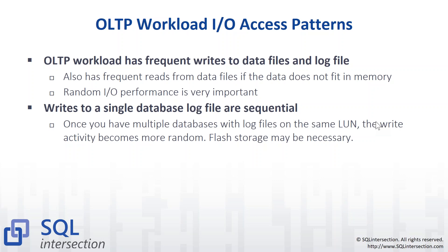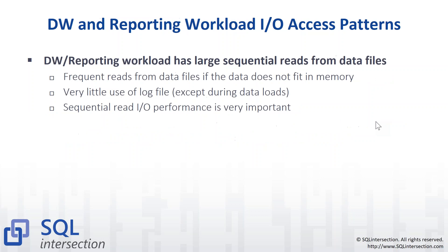For a data warehouse or reporting workload, you're seeing big sequential reads from data files. SQL Server data compression or clustered columnstore indexes can help reduce what you need to read. You're not going to use the log file very much except during data loads, so sequential read I/O performance is very important. For OLAP, you tend to have random reads from your cube files, so random I/O performance is important there, plus sequential writes when building the cube files.